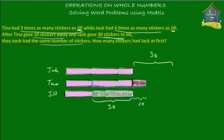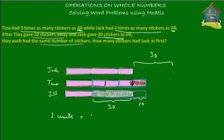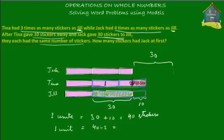Now, can you make a comparison of the green box and the brown box with the pink boxes? Looking at Tina's model diagram, the blue-marked section equals two pink blocks, and that equals one green box and one brown box. So two pink blocks equal the green block plus the brown block. Therefore, two pink units equal 40 stickers. So if two pink units equal 40 stickers, then one pink unit equals 40 divided by 2, which is 20 stickers.